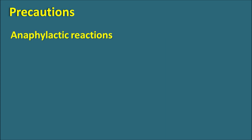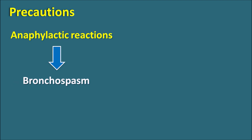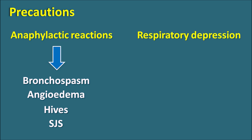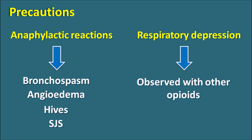Tramadol can also produce anaphylactic reactions — allergic reactions commonly observed with other opiates. This includes bronchospasm, angioedema, swelling, hives, and even a serious condition like Stevens-Johnson syndrome. Another important precaution is respiratory depression. Just like other opiates, tramadol can also produce respiratory depression which may lead to respiratory collapse. That's why this drug should be carefully given in patients who have respiratory disorders.